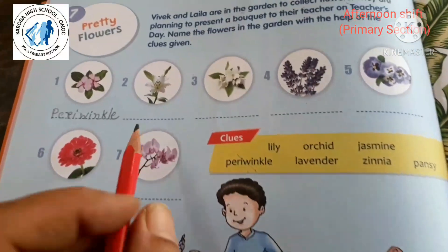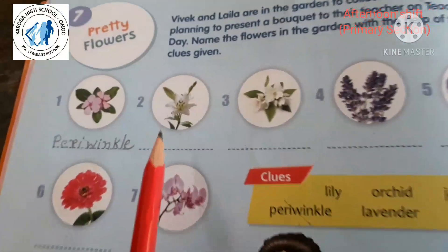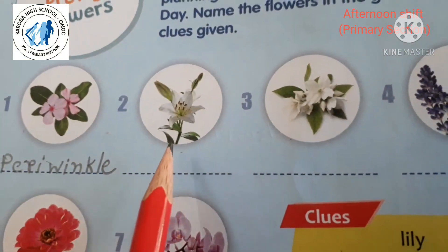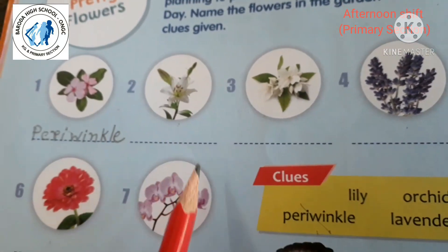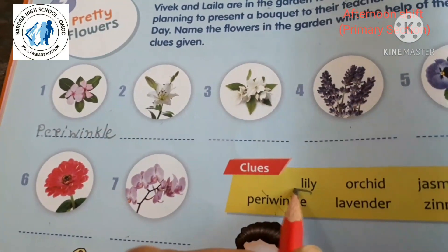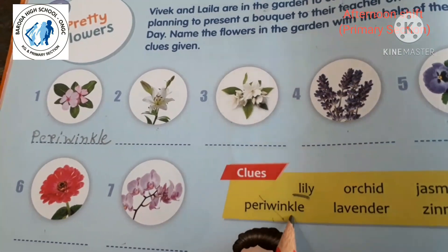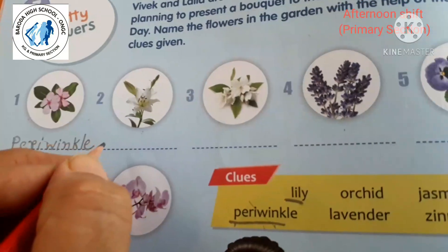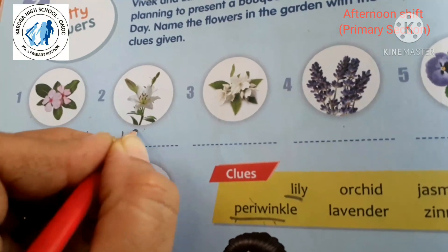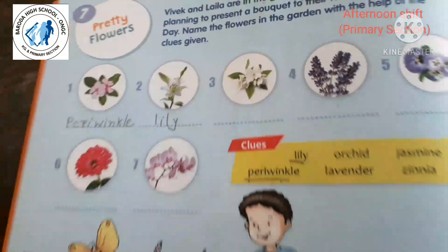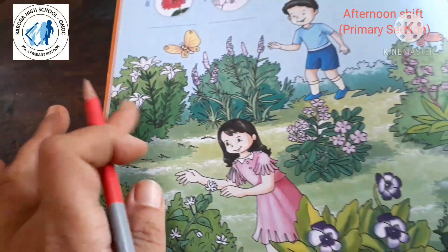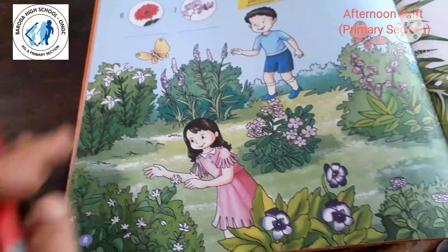Now the second flower — which flower is this? This is lily. Write down here: L-I-L-Y — Lily. And here in the garden is where lily is.